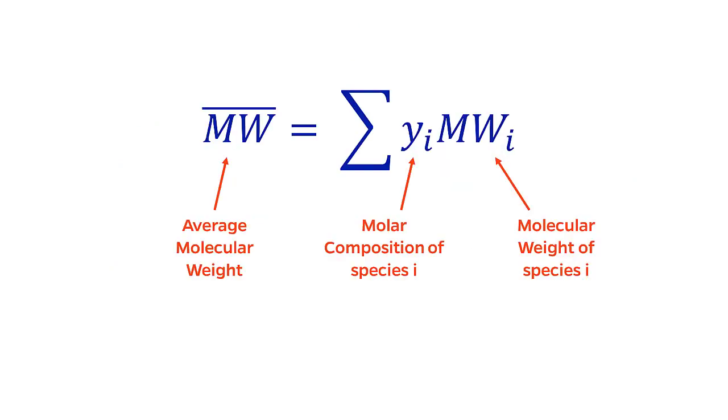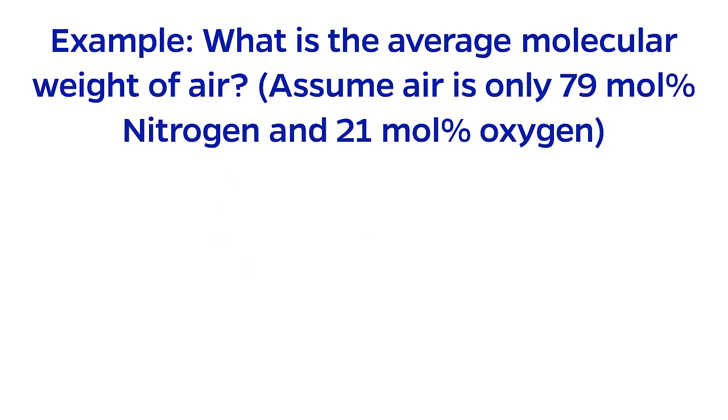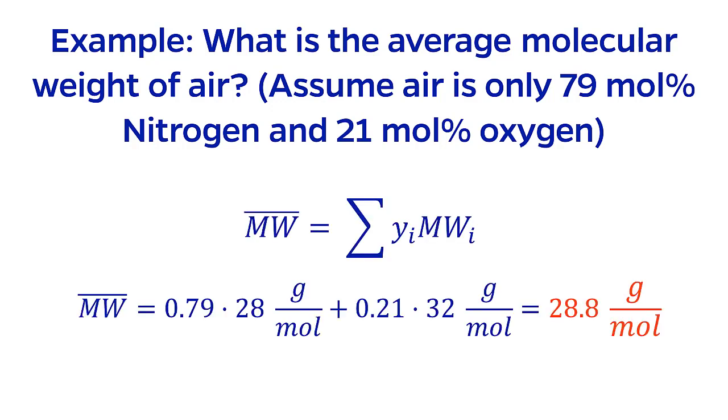The average molecular weight is somewhat straightforward. The calculation is simply the weighted average of the component molecular weights, using the molar composition as the weighting factors. For example, let's calculate the average molecular weight of air. Let's assume, as we always will for this class, that air is 79 mole percent nitrogen, and 21 mole percent oxygen. Of course, in real life there are other trace components, but this will keep the calculation simple. Because the molecular weight for nitrogen is 28 grams per mole, and oxygen's is 32 grams per mole, this calculation gives an average molecular weight of 28.8 grams per mole, but we can simply round this to 29 grams per mole.